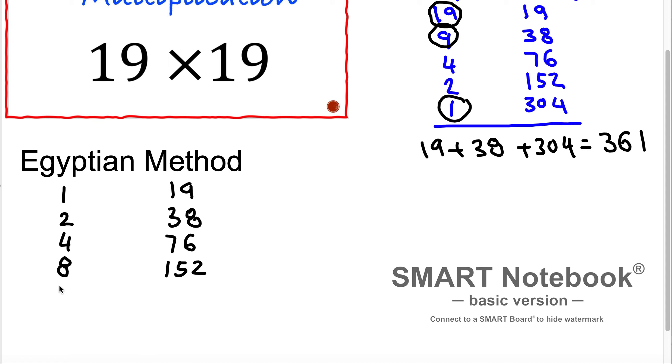If we are doubling 8 it's going to be 16. If we are doubling 152 it's 304. If we are doubling 16 it's 32. But here I'm going to stop because 32 is greater than 19. So therefore we are stopping.